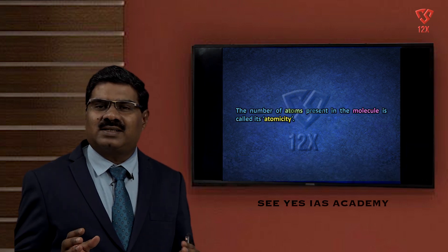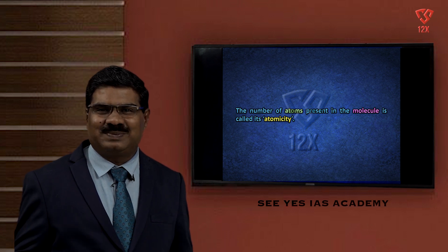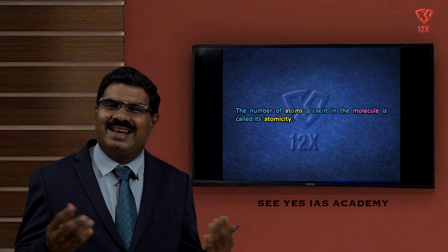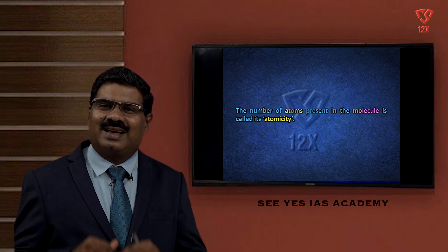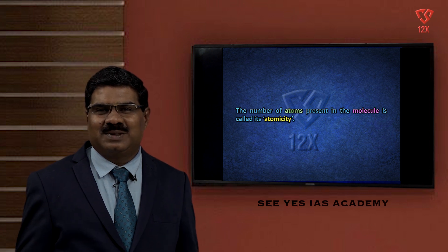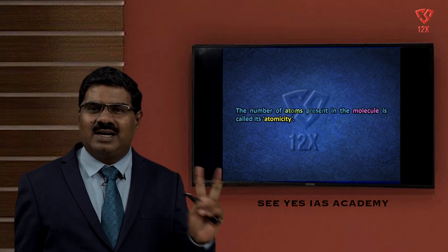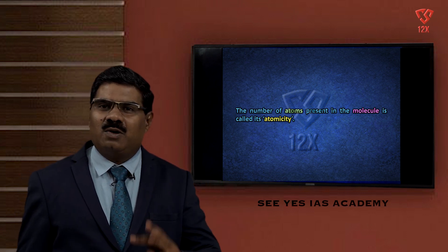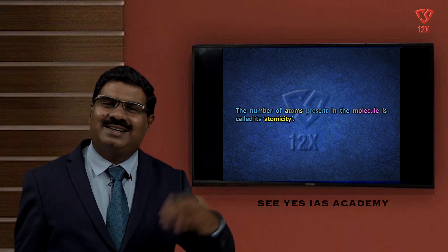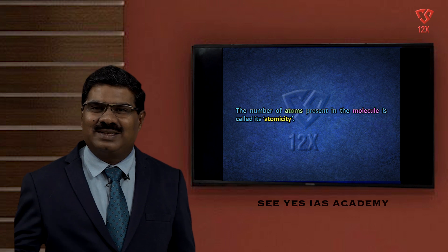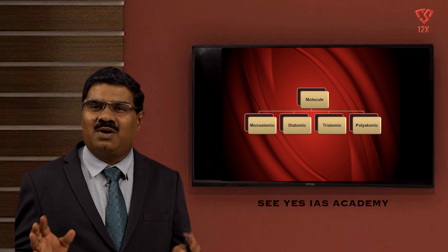The number of atoms present in a molecule is called its atomicity. One atom in a molecule gives atomicity 1; two atoms gives atomicity 2; three atoms gives atomicity 3; more than three atoms gives atomicity more than 3. Based on atomicity, molecules are classified as follows.